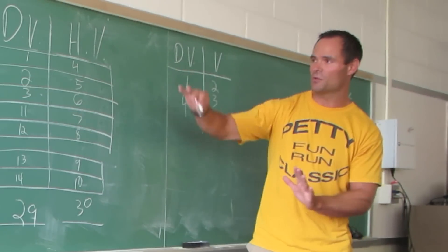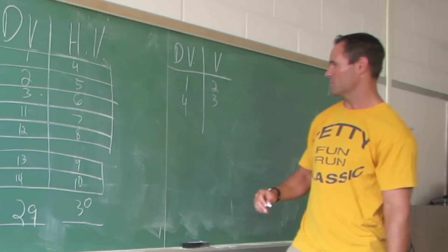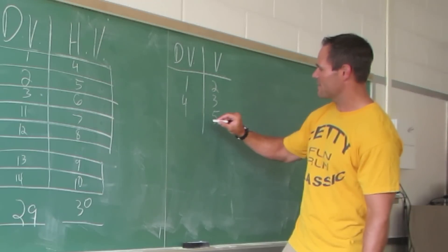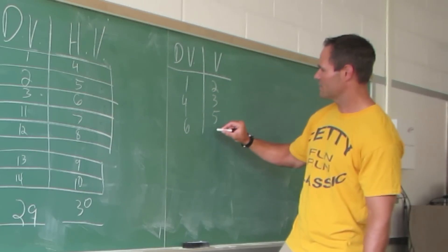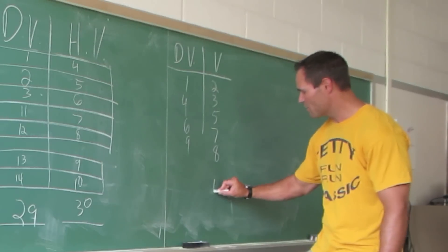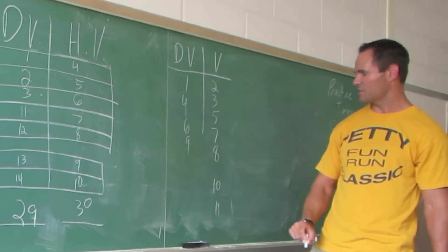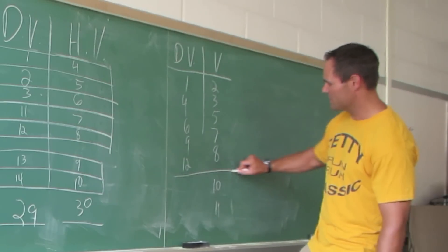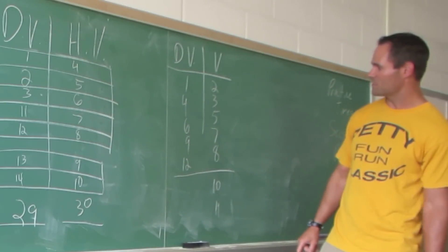So now when we're looking at the score sheet, we're just not looking at the Happy Valley girls. Then they get fifth, we get sixth, they get seventh, they get eighth, we get ninth. Their number 10 and 11 girls displace us, so we get 12th. So we take those top five. Those girls displaced us.